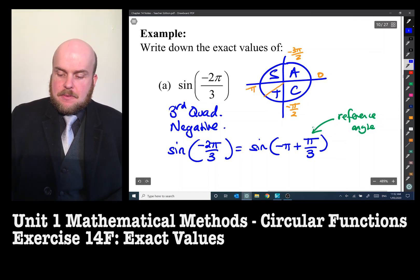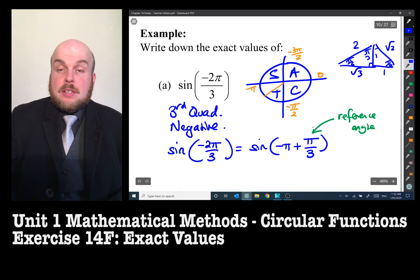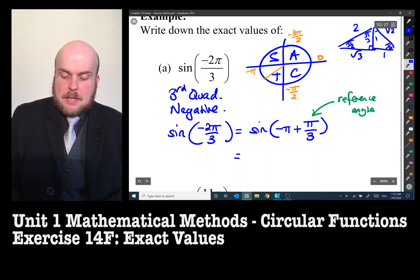So there's the reference angle. Now I can use my table, but otherwise I will be using my exact values triangle: two, one, root three; one, root two. That's pi on six, pi on three, and that's pi on four. So pi on three is over here. So sine is opposite over hypotenuse, so therefore this is going to be equal to negative sine pi on three.